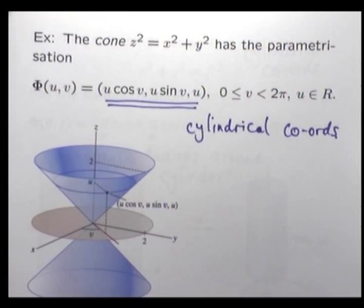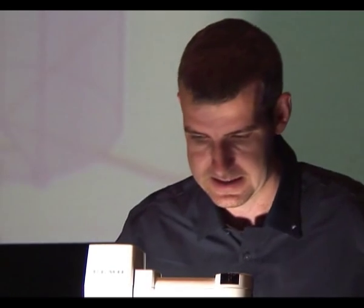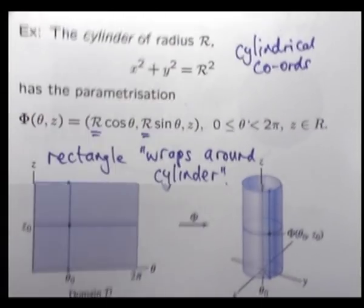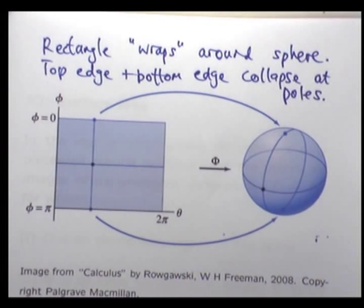Here's another example of a cone — in that case, it was cylindrical coordinates — and a cylinder. We also talked about a sphere. If you want to see all the details again, you can see them on the web. Don't try to copy this down if you didn't get it in the last lecture.